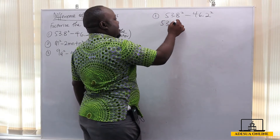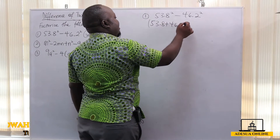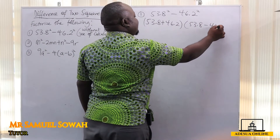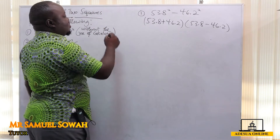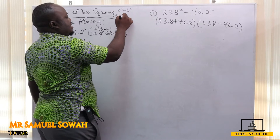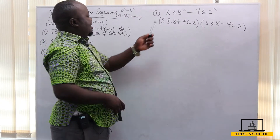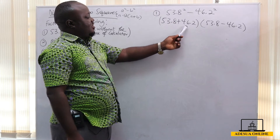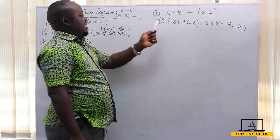So we write this as (53.8 + 46.2)(53.8 - 46.2). The idea of the difference of two squares is a² - b² = (a - b)(a + b), or vice versa. So the same way, this is my a and this is my b, so I have a plus b and then a minus b.